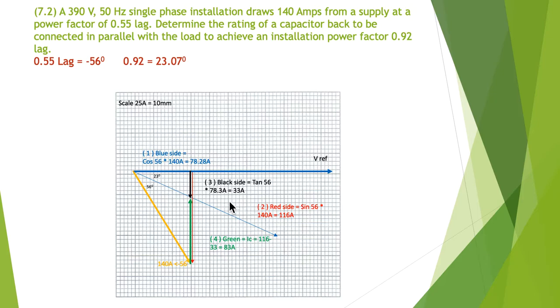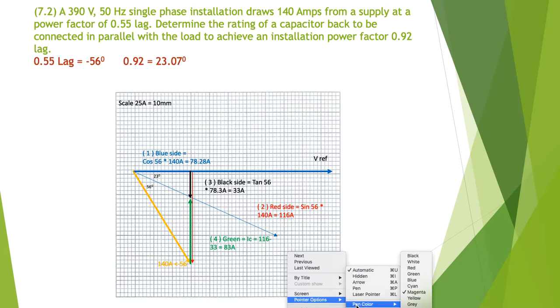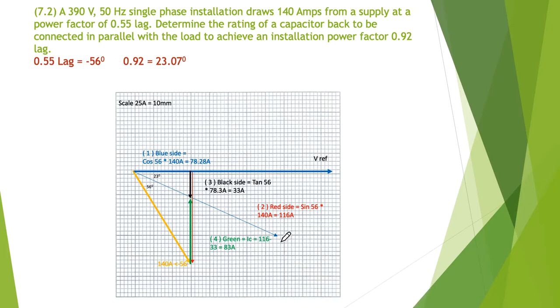I'm subtracting the red and the black to equal the green. Step four: the green one is 116 minus 33, giving me 83 amps. My 83 amps multiplied by my 390 volts for the current in the capacitor.